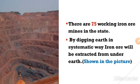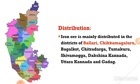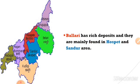By digging the earth in a systematic way, we can extract iron ore from under the earth. You can see in the picture an iron ore mine showing how earth is dug systematically. Mainly, iron ore mines are found in Chikamagalur and Ballari districts of Karnataka. Other districts like Bagalkot, Bidar, Chitradurga, and Tumakuru also produce iron ore but in lesser quantities. In Ballari district, Sandur and Bellary are two major iron ore mines, both producing hematite and magnetite iron ore.